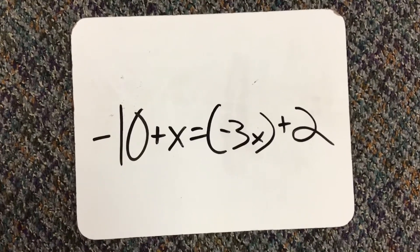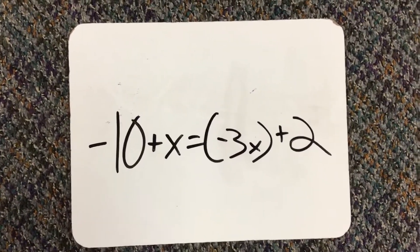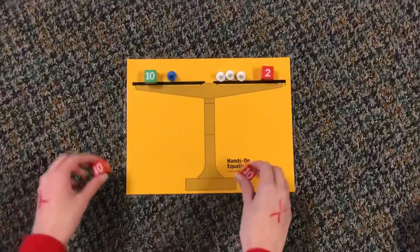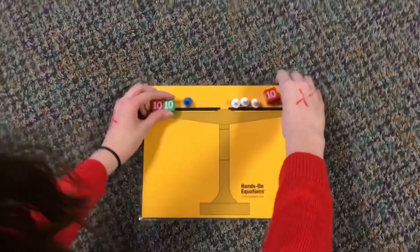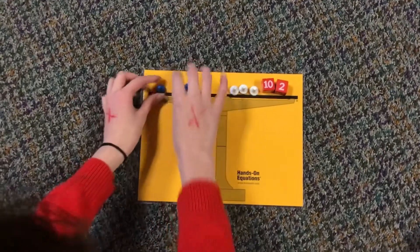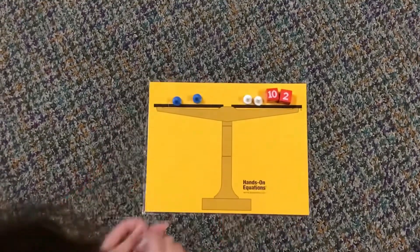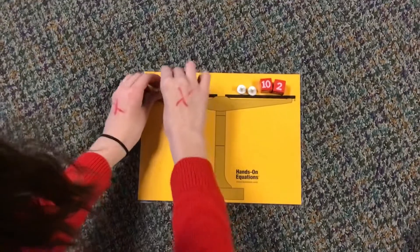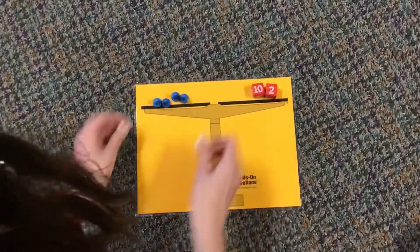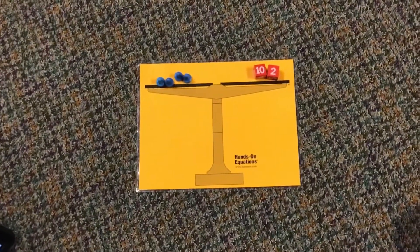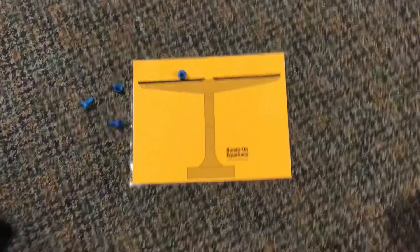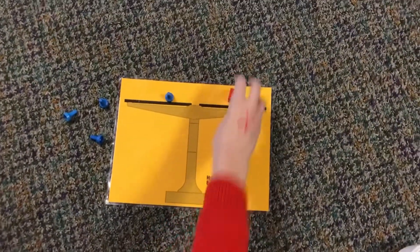Our next problem is negative 10 plus x equals the opposite of 3x plus 2. I'm going to add a positive 10 to both sides to create a pair of 0. Then I'm going to add a pair of 0 to this side and take away the 2 whites. Add another pair of 0 and take away the 2 whites, and add another pair of 0 and take away the last white. Then you divide by 4, and you get x equals 3.